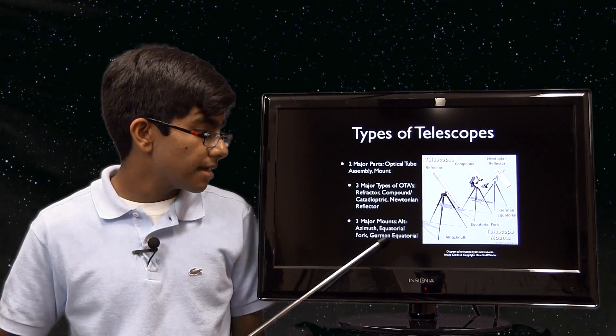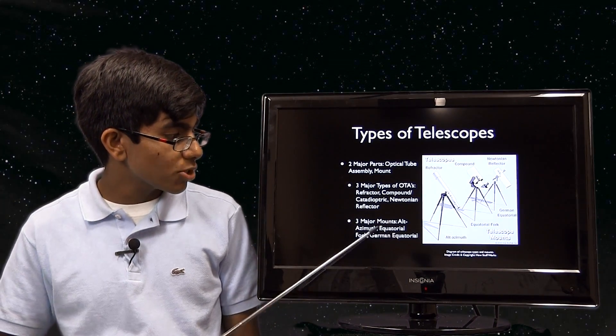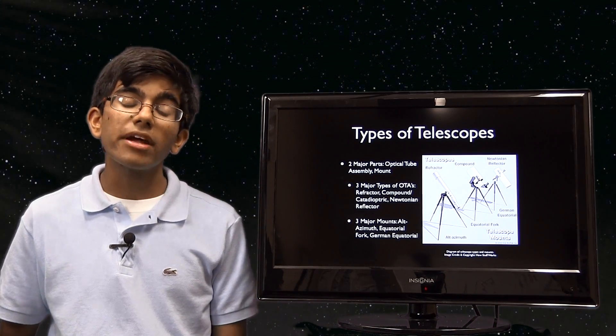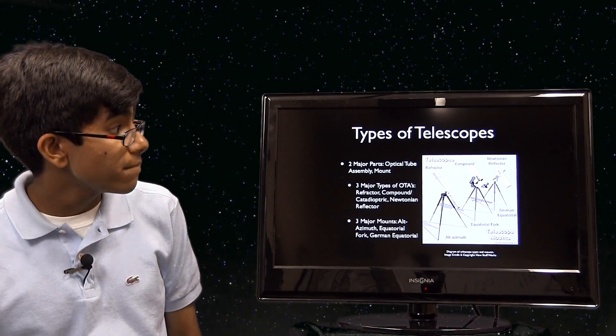There are also three major mounts: alt azimuth, the equatorial fork, or the German equatorial. The equatorial fork and the German equatorial work in pretty much the same way.